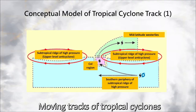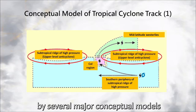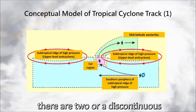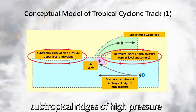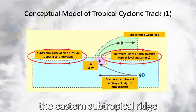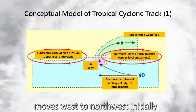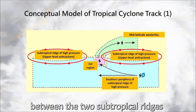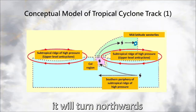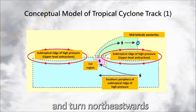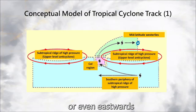Moving tracks of tropical cyclones can be explained by several major conceptual models. In the first conceptual model, there are two or a discontinuous subtropical ridges of high pressure. The tropical cyclone, located in the southern periphery of the eastern subtropical ridge, moves west to the northwest initially. When it enters the cold or weak wind region between the two subtropical ridges, it will turn northwards, then enter the mid-latitude westerlies and turn northeastwards, or even eastwards.